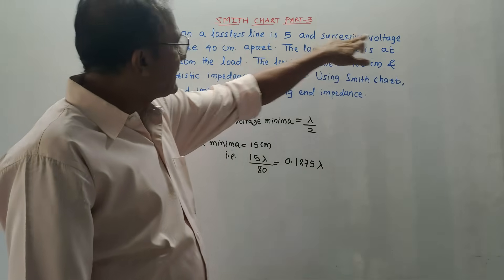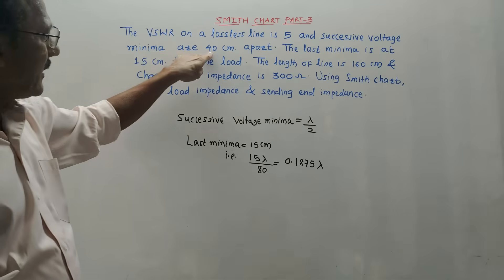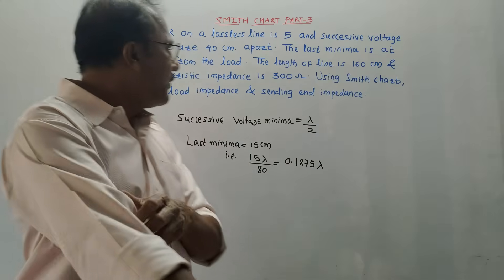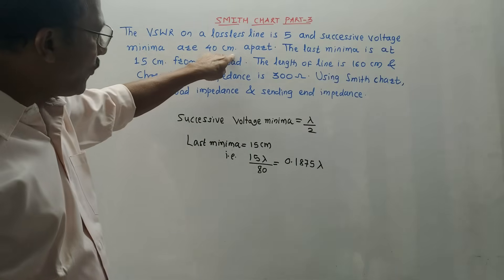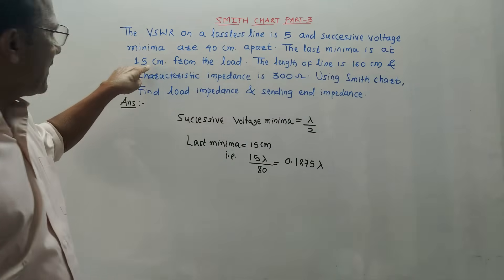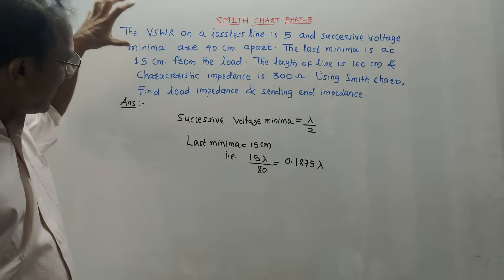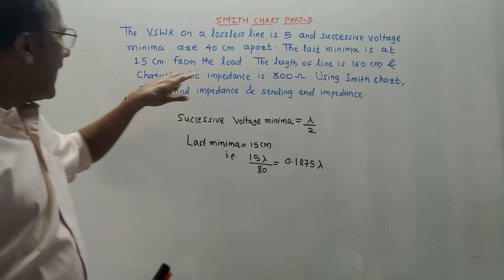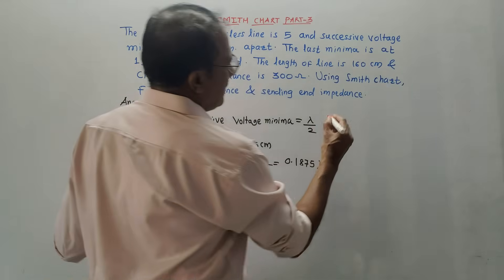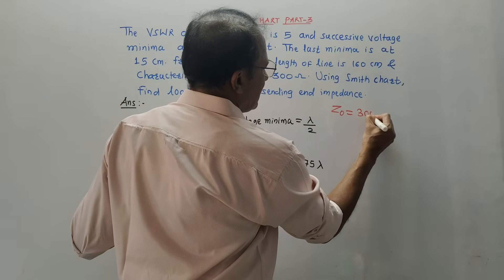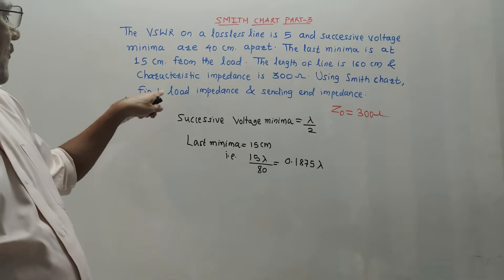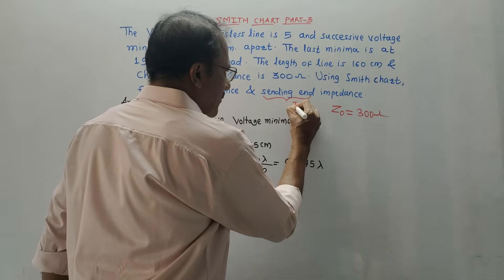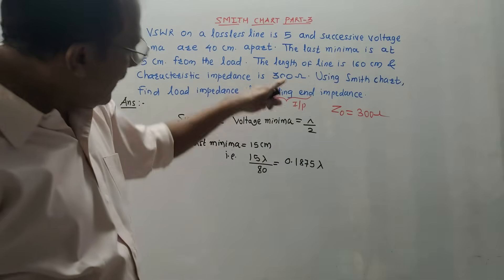The problem: VSWR on a lossless line is 5, and successive voltage minima are 40 centimeters apart. Voltage minima means the point at which you get the minimum value of voltage. The last minima is at 15 centimeters from the load. The length of the line is 160 centimeters and the characteristic impedance Z0 is 300 ohm. Using the Smith chart, find the load impedance and the sending-end (input) impedance.